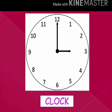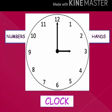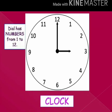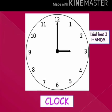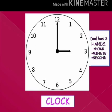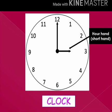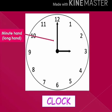The dial has two parts. The dial has numbers from 1 to 12. The dial has three hands: hour, minute, and second. The short hand is the hour hand and the long hand is the minute hand.